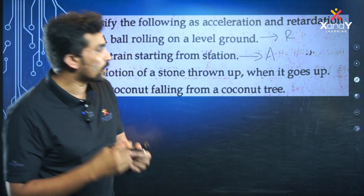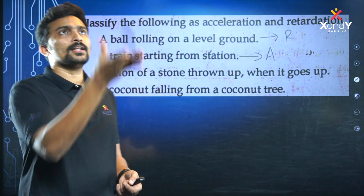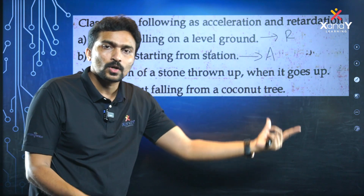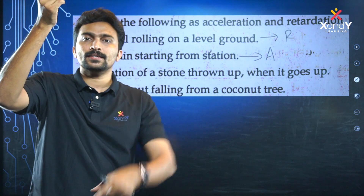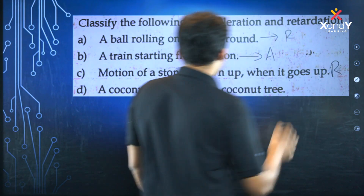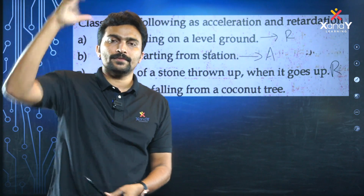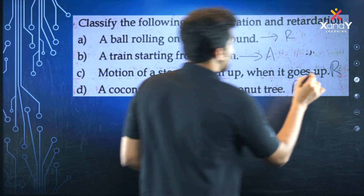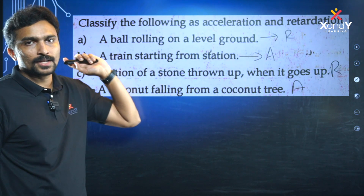The motion of a stone thrown upwards — when it goes up, the speed decreases. So this is retardation. A coconut falling from a coconut tree — the speed increases because of gravity. That is accelerated motion. Now we have classified all of these.